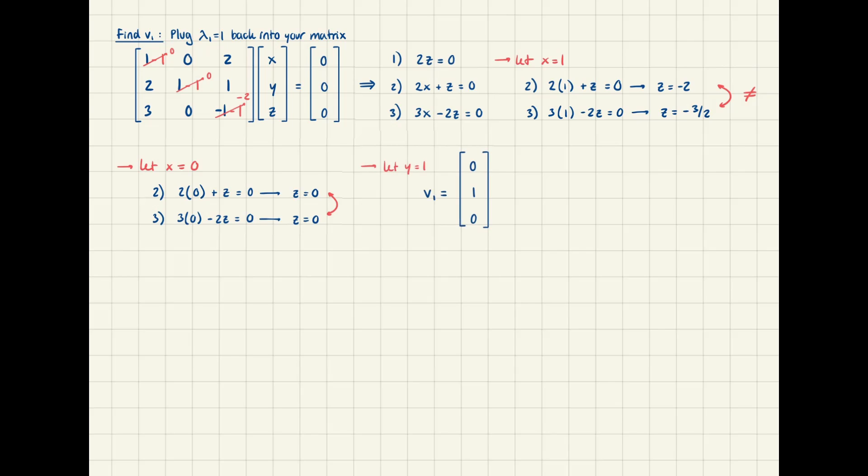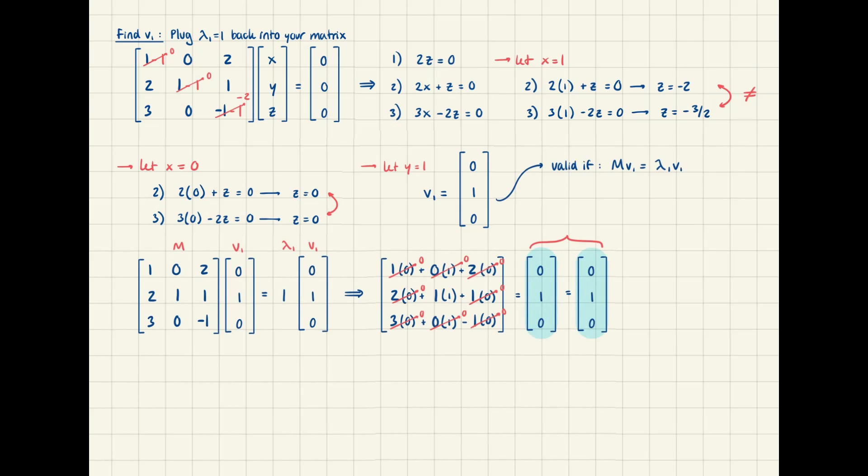You can prove a solution is correct by seeing if the original matrix multiplied by the eigenvector is equivalent to the eigenvalue multiplied by the eigenvector, or mv equals lambda v. After multiplying and cancelling everything out, our two expressions are indeed equal, so that's our eigenvector for the first value.